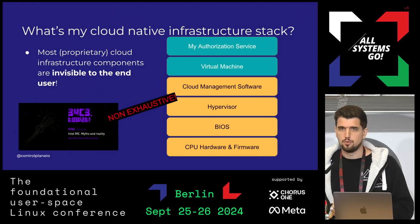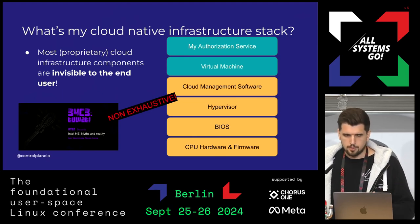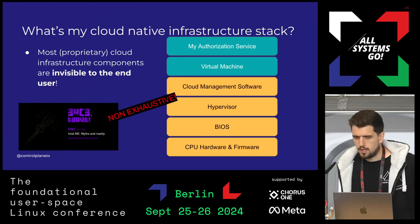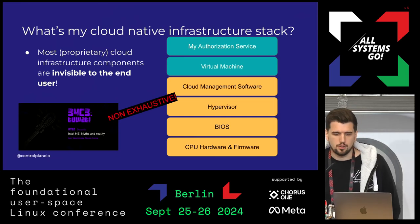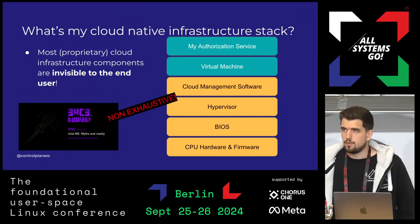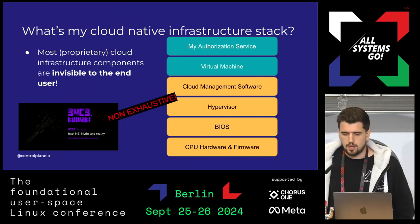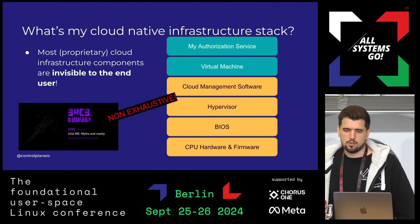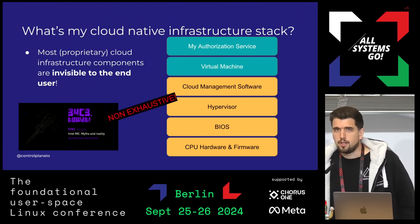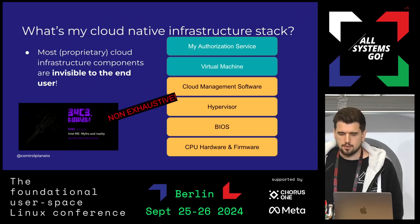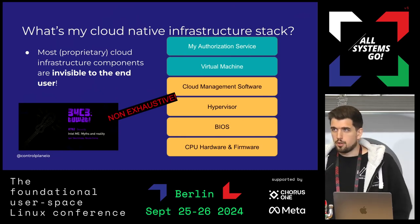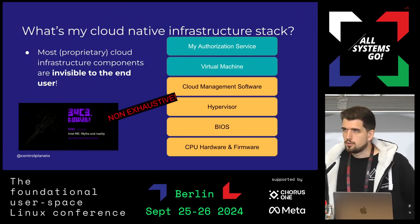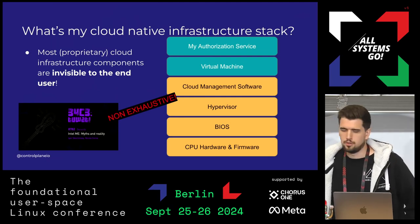If we look at the current cloud native infrastructure stack: as the end user, I just want to rent a virtual machine and deploy an authorization service to enable my zero trust environment. But I need to rely on all these highlighted components to get their security and patching right. This is not always visible — when I rent a VM from a cloud provider, I don't see the cloud management software, and the hypervisor has direct access to the VM it's spawning. If the hypervisor is malicious or used maliciously by the cloud provider, they can get access to my VM, all the way down to the BIOS and even the CPU firmware.